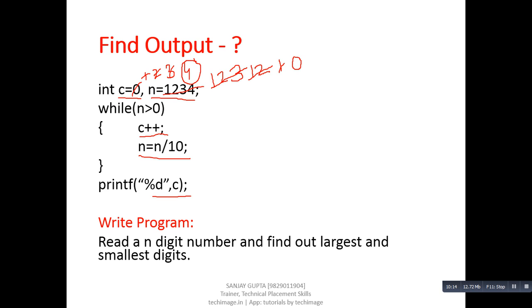You can easily see that this program identifies the number of digits in a number. Using this logic, you can solve the next problem: read an n-digit number and find the largest and smallest digits. For example, if the number is 1234, the largest digit is 4 and the smallest is 1. Do practice of these programs so that you can learn the working of the while loop. Thank you.